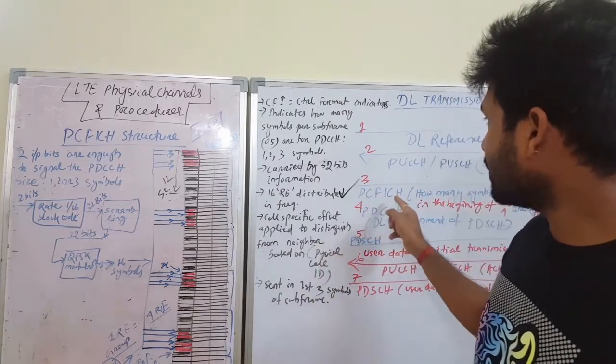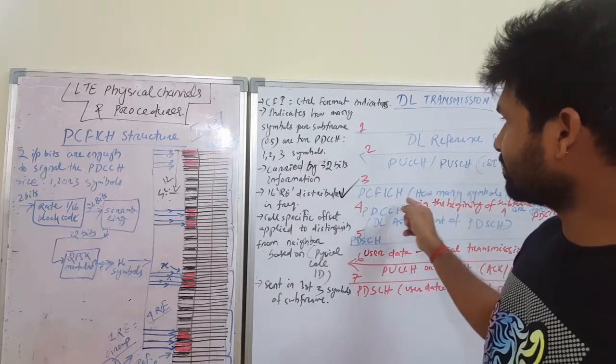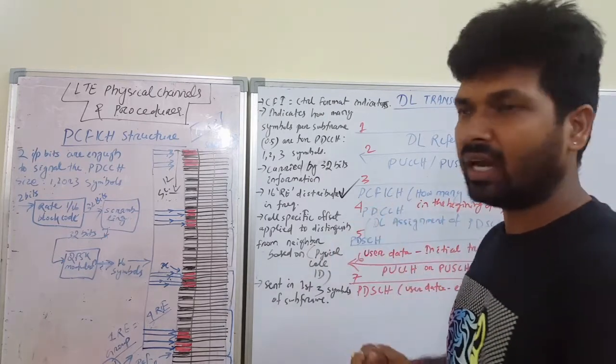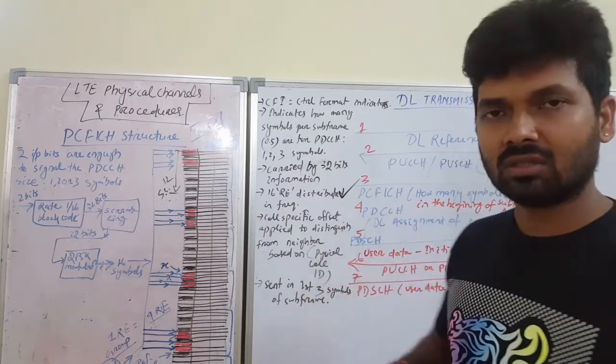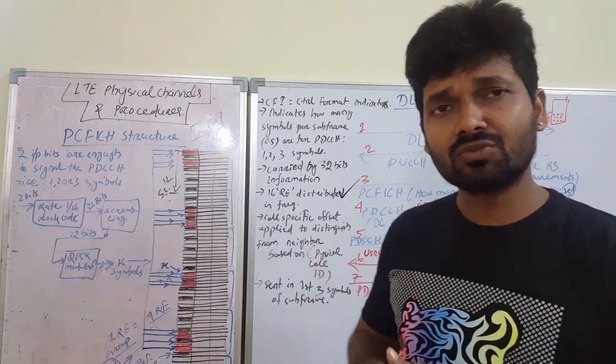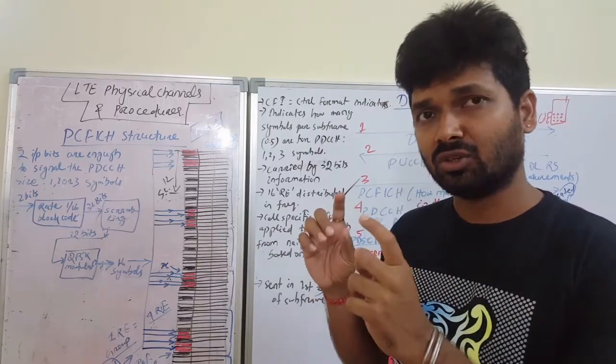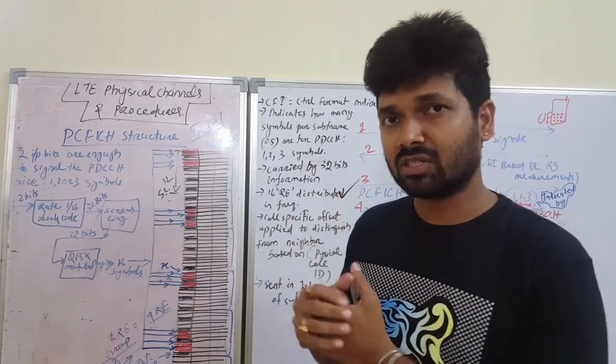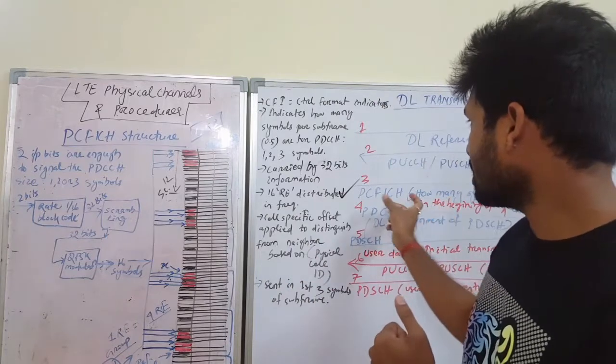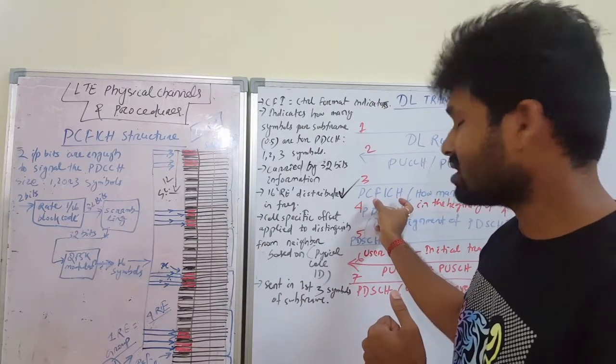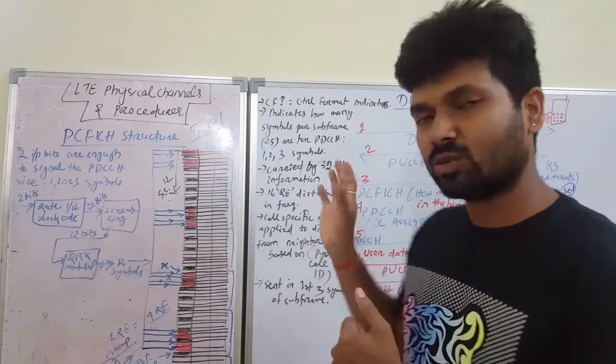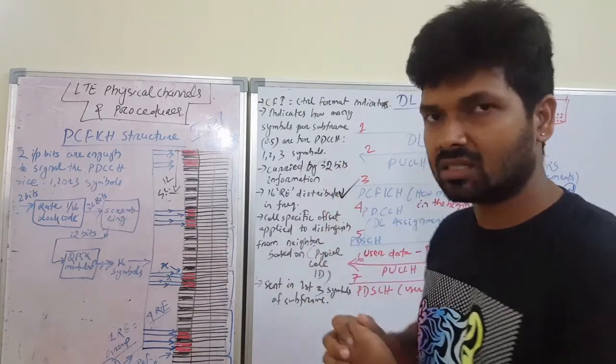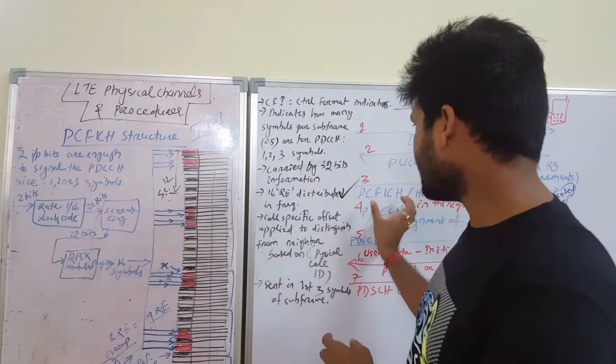the third step ECFICH transmission and how it is transmitted. Whether we have indicators for PDCCH, whether one, two, or three symbols for PDCCH transmission. The ECFICH is used for how many symbols - one, two, or three for PDCCH transmission. Now we'll exactly understand